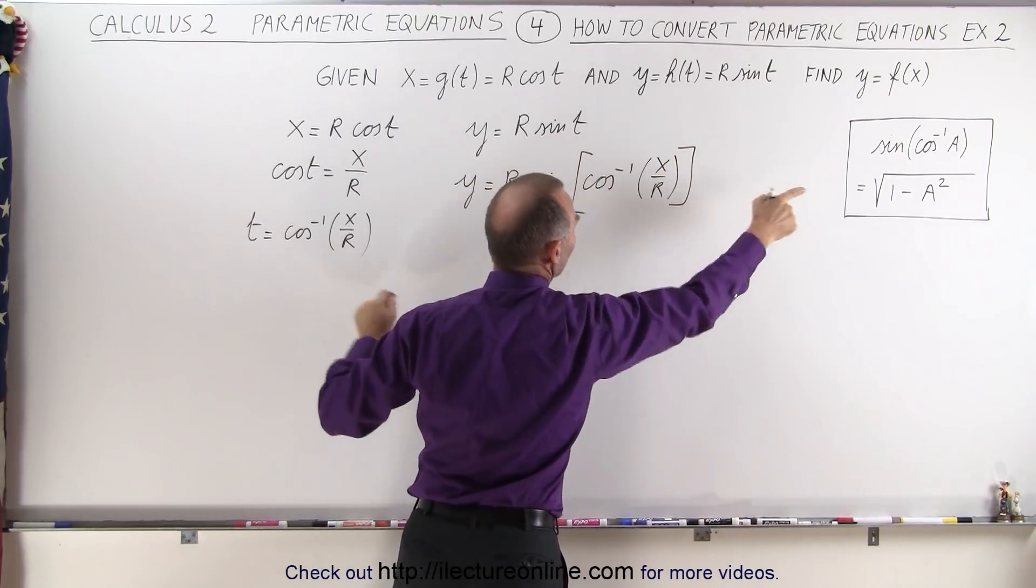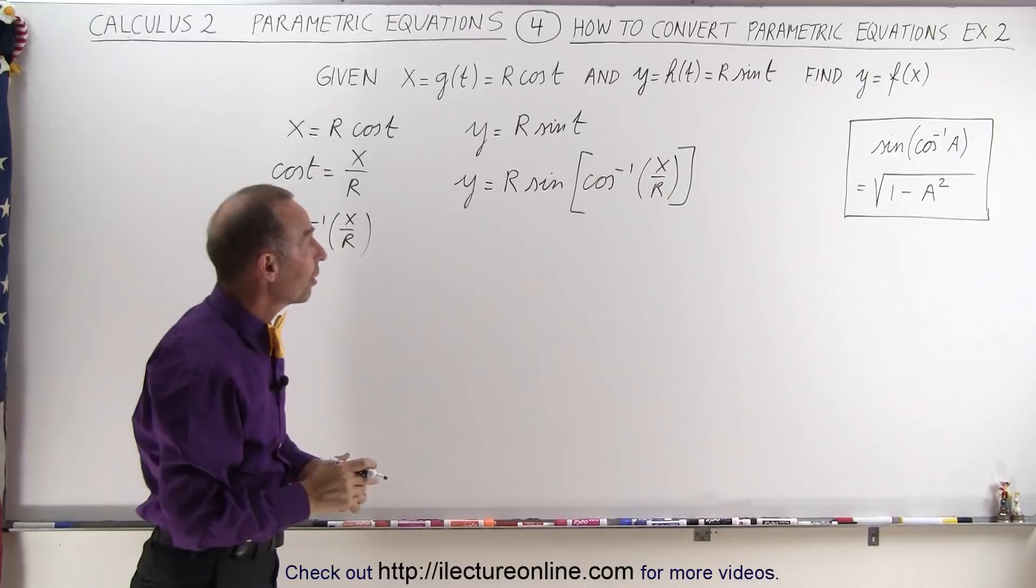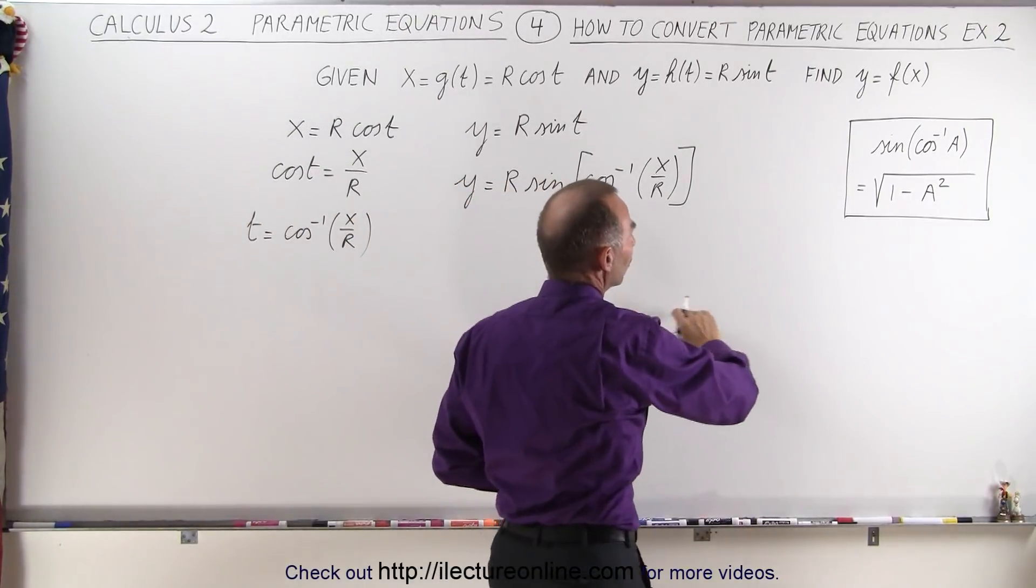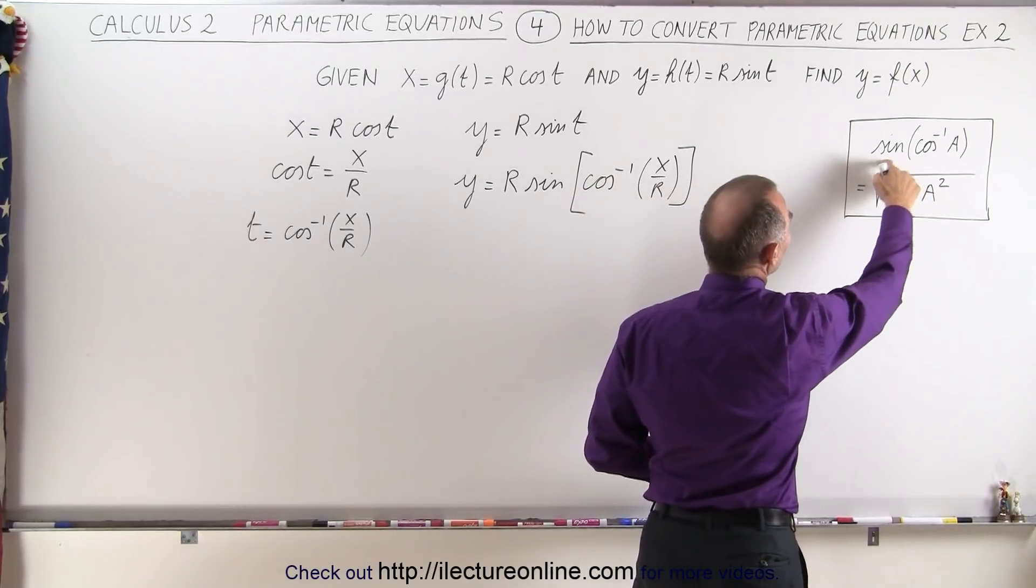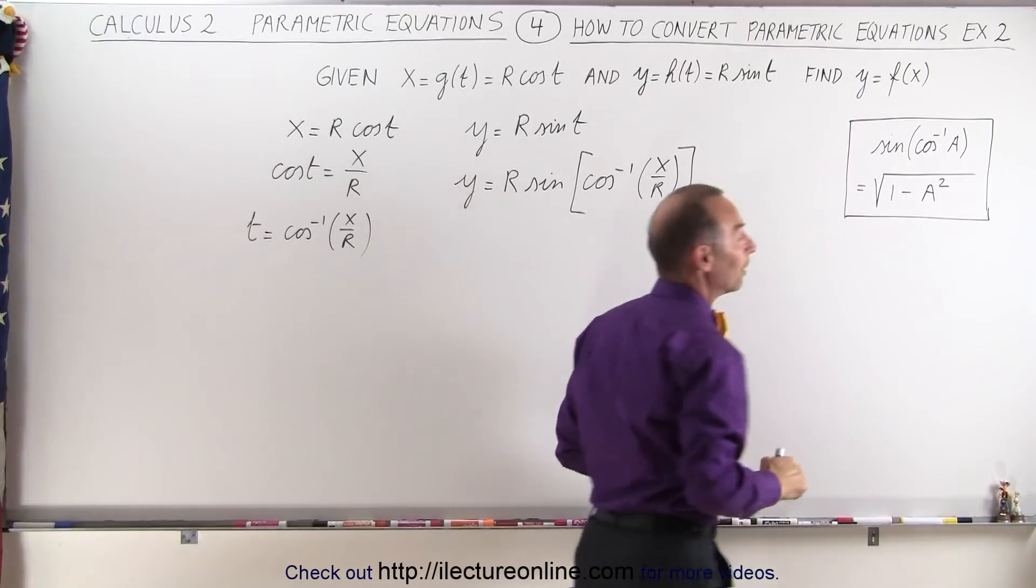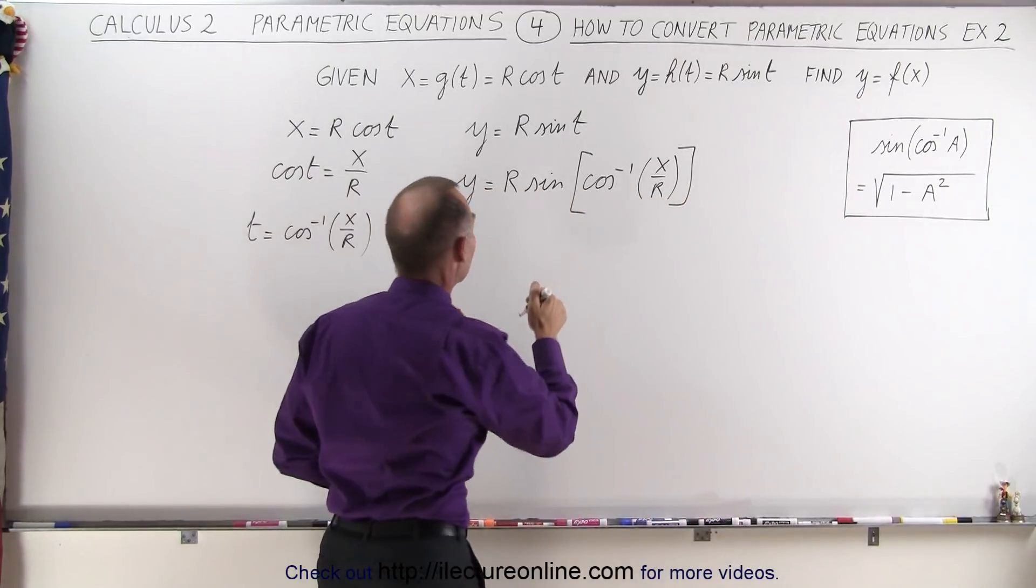And now you can see why I wrote that on the board. Now how do you solve for the sine of the inverse cosine of a function or of an expression x over r? Here you can see that the sine of the inverse cosine of a is equal to the square root of 1 minus a squared. So let's go ahead and plug that in here.